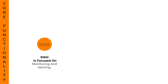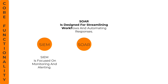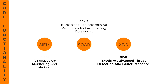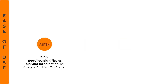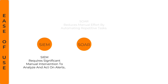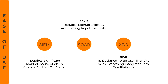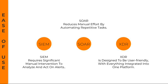Core functionality: SIEM is focused on monitoring and alerting. SOAR is designed for streamlining workflows and automating responses. XDR excels at advanced threat detection and faster response. Ease of use: SIEM requires significant manual intervention to analyze and act on alerts. SOAR reduces manual effort by automating repetitive tasks. XDR is designed to be user-friendly with everything integrated into one platform.